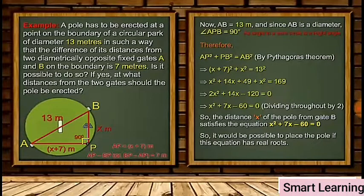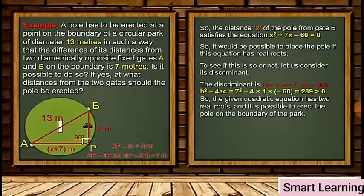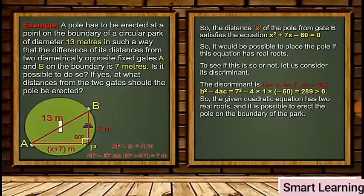So it would be possible to place the pole if this equation has real roots. To see if this is so, let us consider its discriminant. The discriminant b² - 4ac = 7² - 4(1)(-60) = 289, which is greater than 0. So the given quadratic equation has two real roots, and it is possible to erect the pole on the boundary of the park.